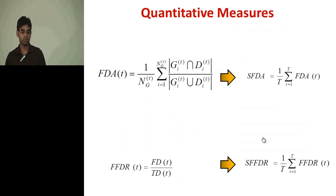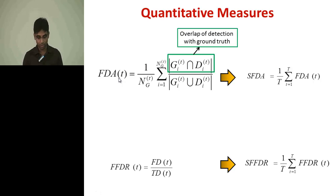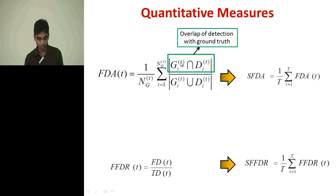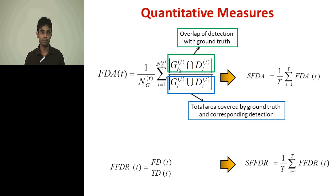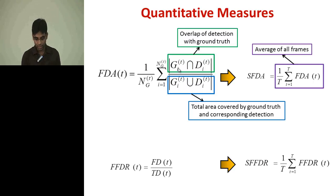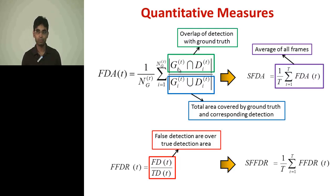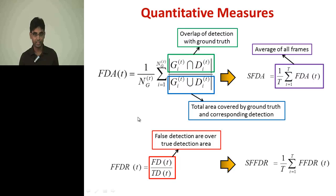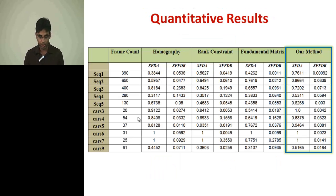The quantitative measures used are: FTA (frame detection accuracy), where the numerator is the overlap of the ground truth and detected blobs — G is the ground truth of the t-th frame and the i-th object — and the denominator is the total area of ground truth and detected blobs. SFDA (sequence frame detection accuracy) is the average FTA over all frames. FFDR (false frame detection rate) is the false detected area of all false blobs over the truly detected blobs area, averaged over all frames.